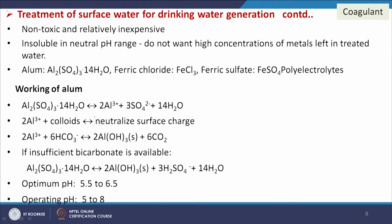Common coagulants include aluminum sulfate Al₂(SO₄)₃·14H₂O (alum), ferric chloride FeCl₃, ferric sulfate Fe₂(SO₄)₃, and polyelectrolytes. These materials are normally non-toxic and relatively inexpensive — it is important they are non-toxic since toxicity would be dangerous for health. They are insoluble in the neutral pH range and do not leave high concentrations of metals in the treated water.